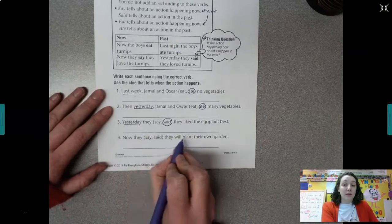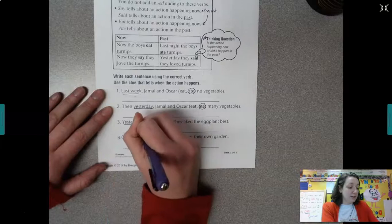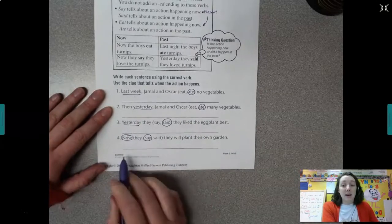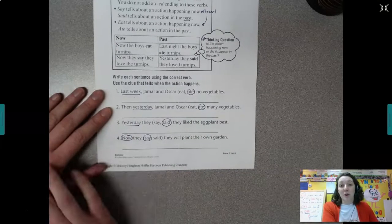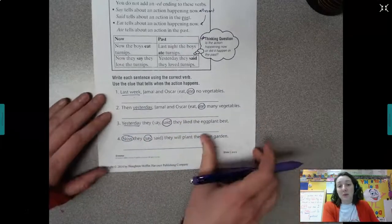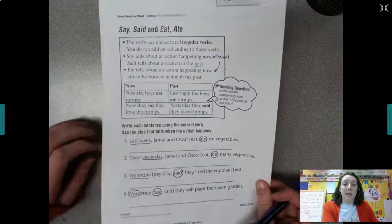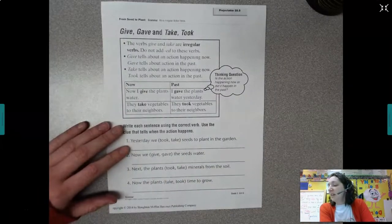Now, they what? They will plant their own garden. Since it's happening now, I know it's in the present, so it's going to be say. Now, they say they will plant their own garden. So not too tricky. A lot of these things you do naturally anyways while you're speaking. Just really paying attention to the fact that they are irregular in the past tense. So say, said, eat, ate.